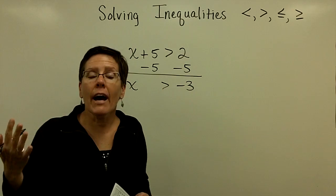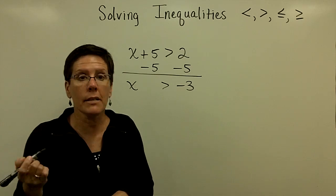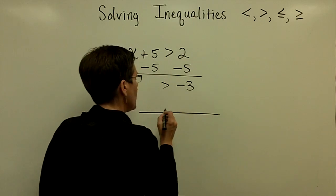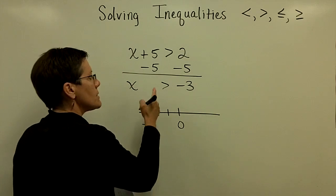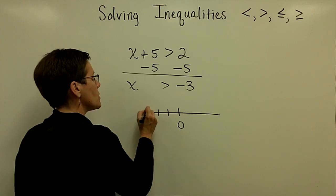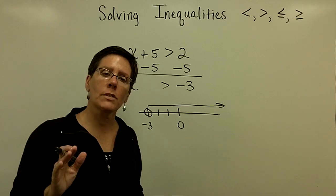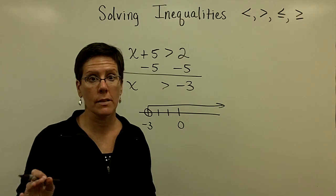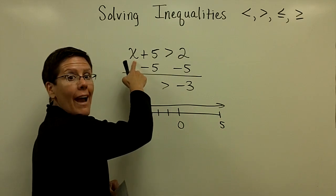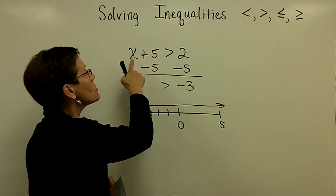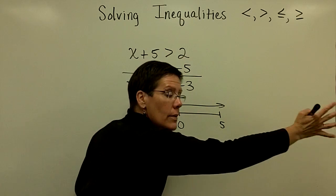I find out that the solutions that are good for this equation, for x, are any values that are greater than negative 3. So not just one number, but on a number line, if I have the number 0 here, here's negative 1, negative 2, negative 3 — it's any value that is greater than this. I could go way out to 5, put it in for x, and it would be true, because 5 plus 5 is 10, and 10 is indeed greater than 2.